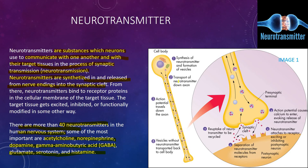The mechanism of neurotransmitter action includes: synthesis and formation in vesicles; transport of the neurotransmitter down the axon; occurrence of action potential; action potential causes calcium to enter, evoking release of neurotransmitter; the neurotransmitter attaches to receptors; separation of the neurotransmitter; reuptake of the neurotransmitter; and finally, vesicles without neurotransmitter are transported back to the cell body.